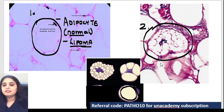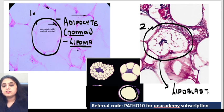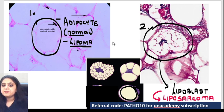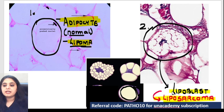But then what is the second one? The second one is labelled as a lipoblast. So first and foremost, if you ask me in which tumour or which condition do I see lipoblast — lipoblasts are seen in cancerous conditions. It is seen in liposarcoma. So a benign tumour will show me a normal looking adipocyte, whereas a cancerous tumour of the fat will show me lipoblast.